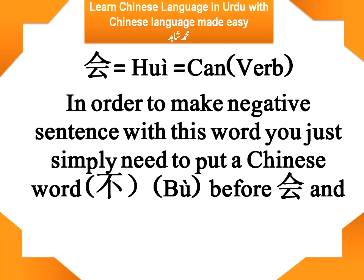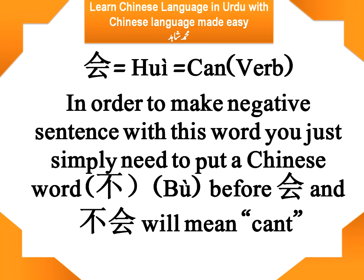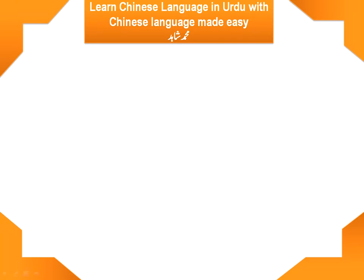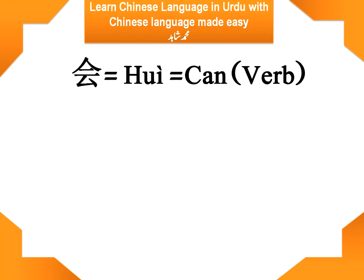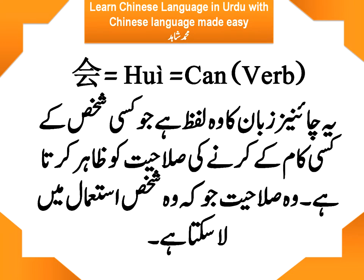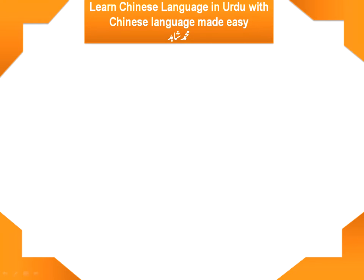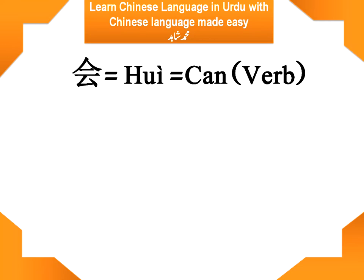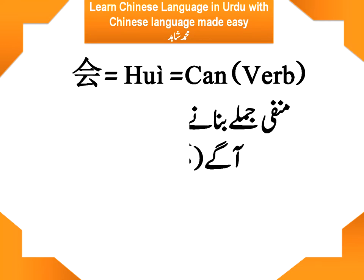If someone has a skill, they can use 会. The other one who does not have the skill can use 不会. So in order to make a negative sentence with this word, you simply need to put the Chinese word 不 before 会, and the word becomes 不会, which means 'cannot.' This is its description in Urdu — meaning I don't have a skill or I don't know this work.